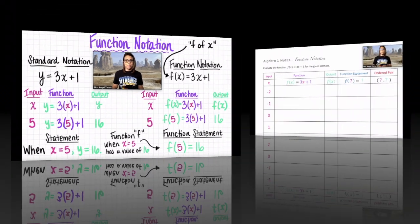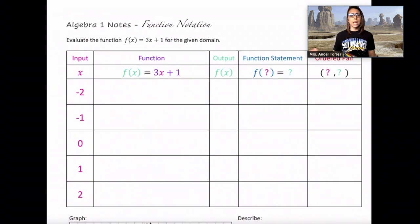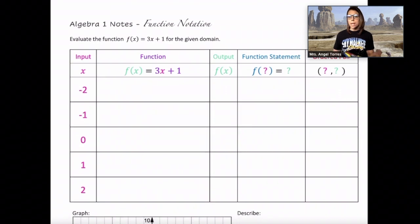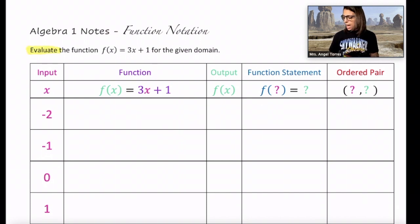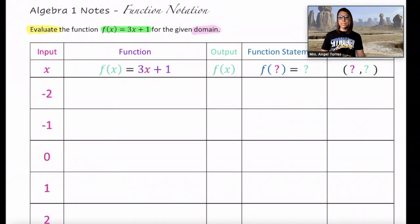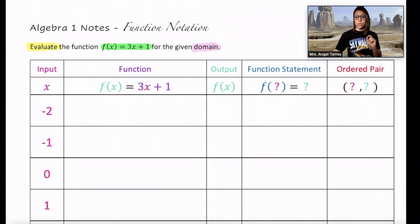Let's look at our example. Hopefully you were able to either print out these notes or set them up in your notebook. We have a table where we have our inputs, our function, the function statement, and an ordered pair. Then we're going to graph them, and then we're going to describe the graph. Pause the video if you need to set this up. The directions are to evaluate the function — evaluate just means find the values. We read this as f of x equals 3x plus 1 for the given domain. Remember, domain is your set of inputs. We are given a specific set of inputs: negative 2, negative 1, 0, 1, and 2. I'm going to walk you through the first few, and then you'll be able to do some on your own.